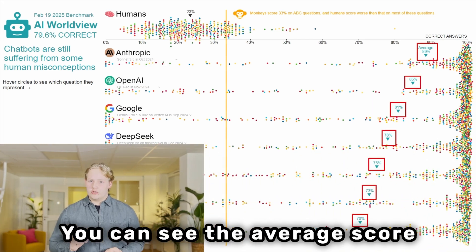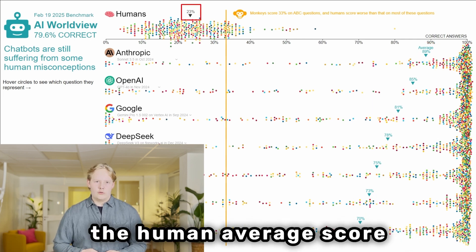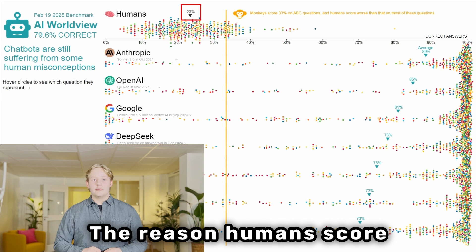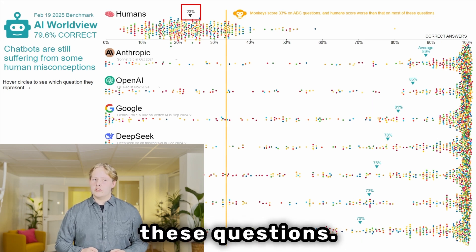You can see the average score of each chatbot on each row, and at the top you see the human average score of 23%. The reason humans score so terrible on these questions is because that's how we picked these questions.